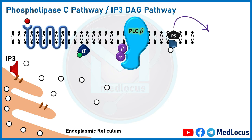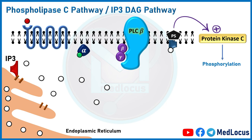The calcium ions released into the cytosol aid in muscle contraction and activation of certain enzymes. DAG, which is membrane-bound, together with calcium ions and phosphatidylserine, activates protein kinase C, or PKC. PKC, being a kinase, phosphorylates enzymes and proteins within the cell, while DAG causes an increase in protein kinase C levels within the cell.